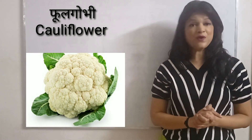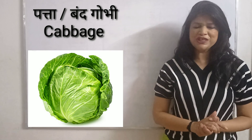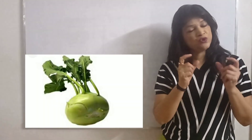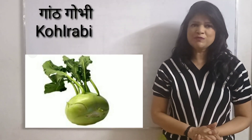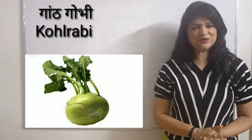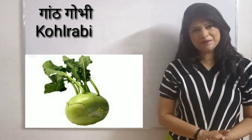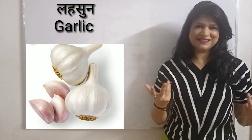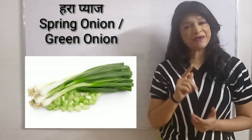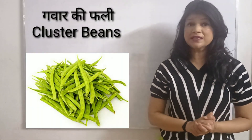Phool gobi is called cauliflower. We call it kohlrabi. We call it ginger. We call it garlic. We call it spring onion or green onion.